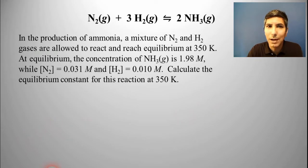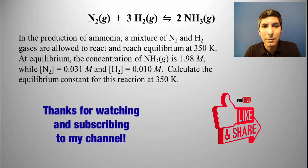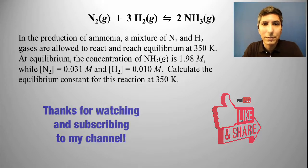Now, let's try an example problem. In the production of ammonia, a mixture of nitrogen and hydrogen gases are allowed to react and reach equilibrium at 350 kelvins. At equilibrium, the concentration of ammonia gas is 1.98 molar, while nitrogen equals 0.031 molar, and hydrogen equals 0.010 molar. Calculate the equilibrium constant for this reaction at 350 kelvins.